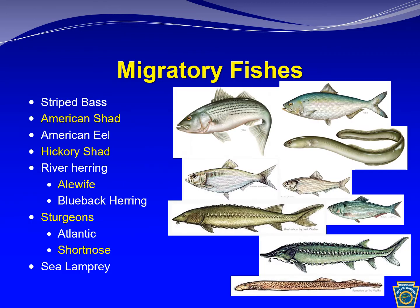Migratory fishes is a term used to collectively reference a group of fish including striped bass, American shad, American eel, hickory shad, river herring, sturgeons, and sea lamprey.